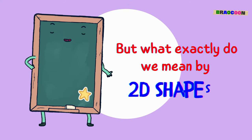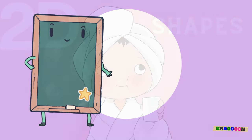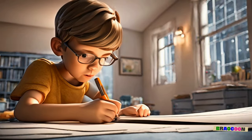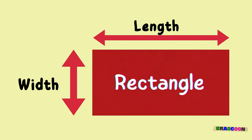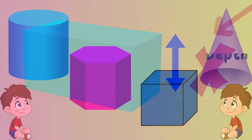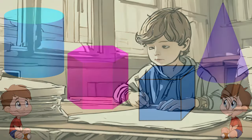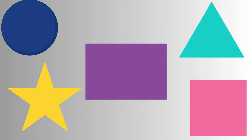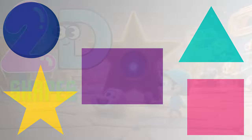But what exactly do we mean by 2D shapes? 2D shapes are like the flat drawings you create on a piece of paper. They have length and width, but no depth, so they don't stick out from the surface. Imagine drawing a smiley face, a triangle, or a star. All these pictures that stay flat and can't be picked up are 2D shapes.